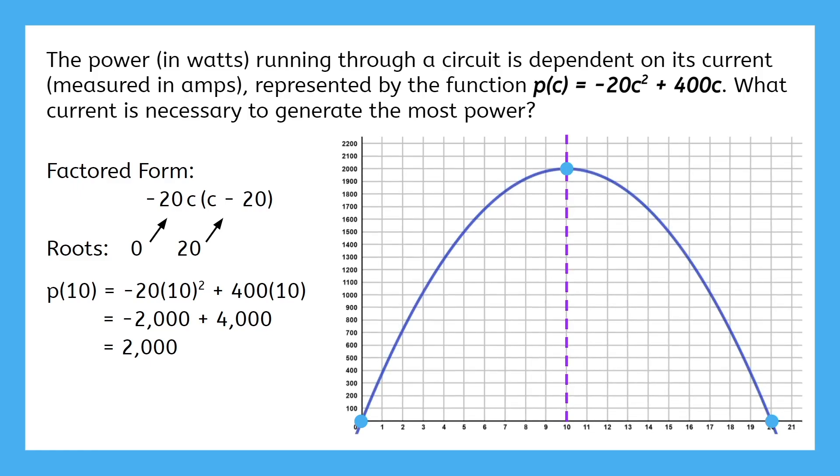After we draw the curve through the points, we now have enough information to answer the question: what current is necessary to generate the most power? The maximum power is found at the vertex, where the current is 10 amps.